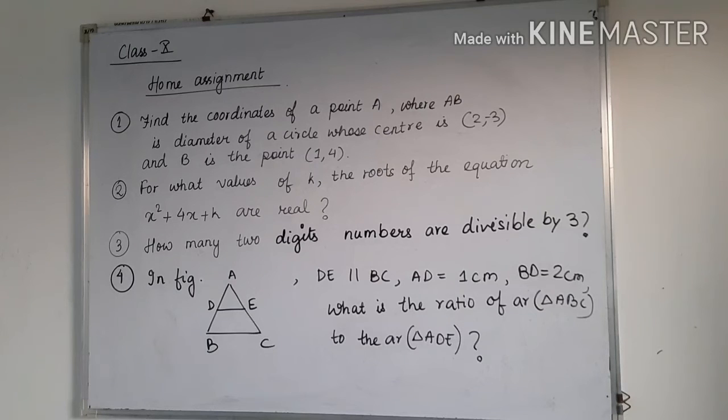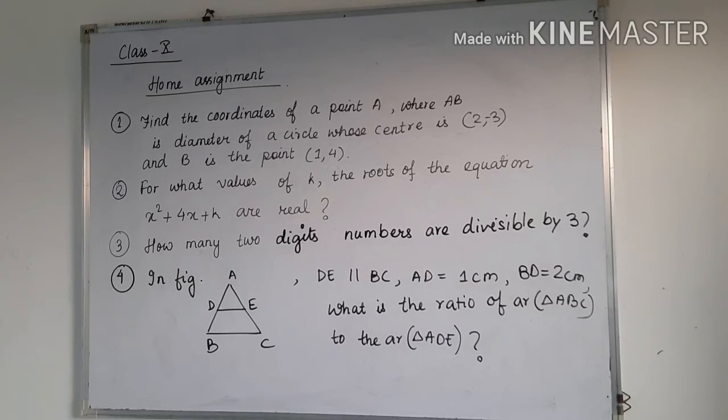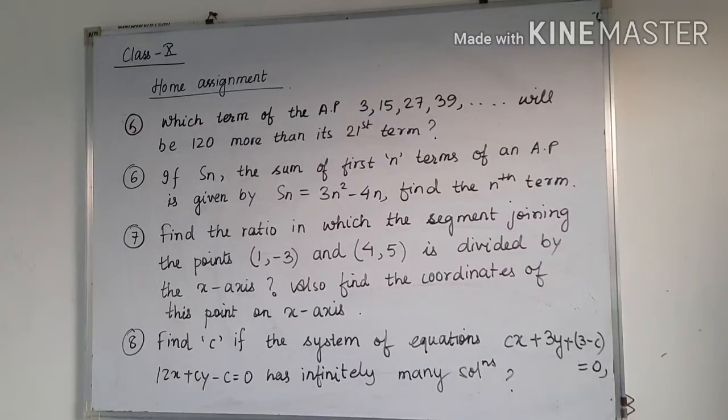Next is question number 4. This figure is given. Here it is given DE is parallel to BC and AD is 1 cm, BD is 2 cm. So we have to find what is the ratio of area of triangle ABC to the area of triangle ADE. So see the line DE is parallel to the third side. So there was a condition. You have to see the condition according to that condition, you have to apply the formula.